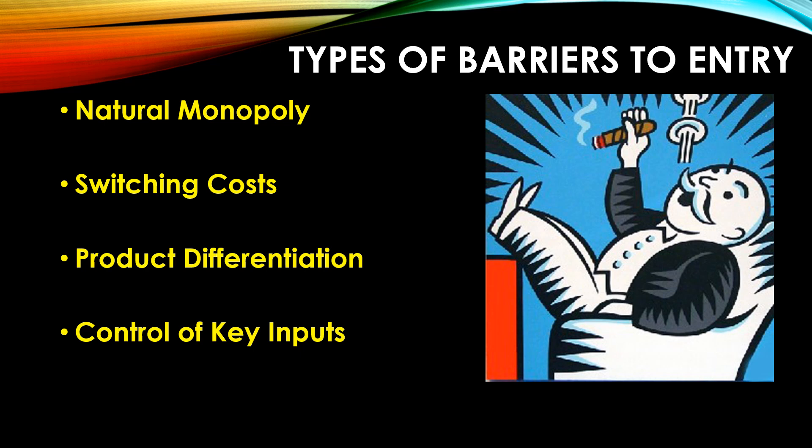A fifth and final type of barrier to entry could be an official government regulated barrier to entry. You can think of situations where the government regulates a certain industry and says only these firms can produce, or only firms that meet certain requirements can produce, or they create a situation where only a certain amount of firms can have access to a medallion to produce — such as was the case in the taxi cab industry in New York City for a while. Or they might regulate the situation such that you have to meet certain standards or buy into some program, or explicitly state only these firms can produce, in effect keeping other firms out.